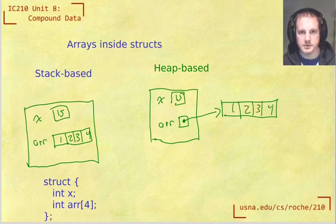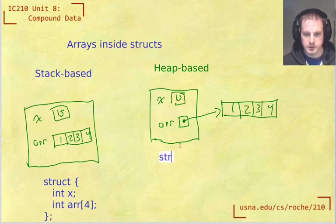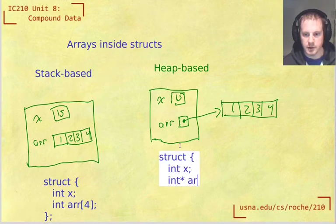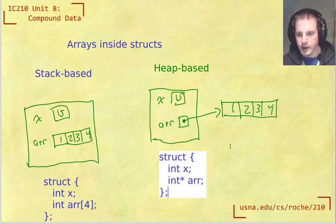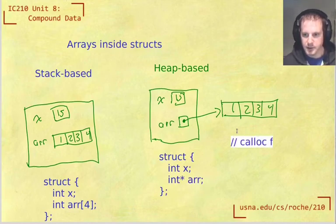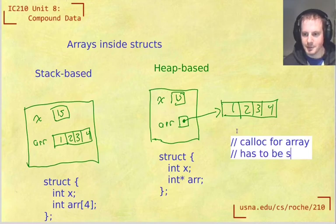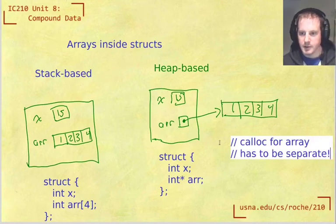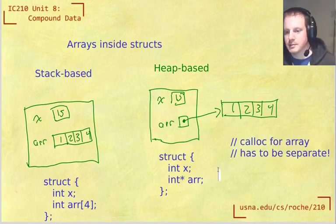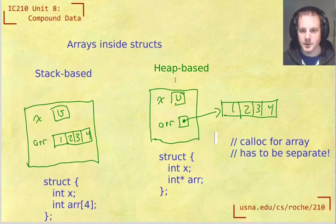So what this would look like in terms of the struct declaration would be struct with int x, same as before, but now it would be int* arr. And what I want to emphasize again is that the calloc for the array has to be separate. We can't do this at the same time as we're declaring the struct very easily; we usually have to have a separate step to allocate that array.